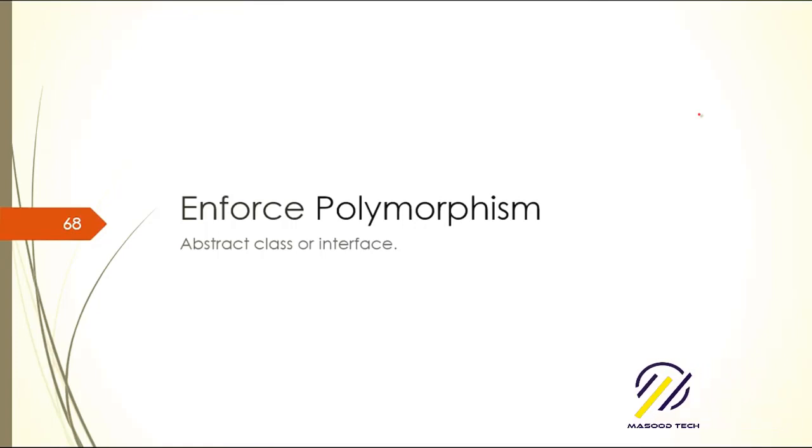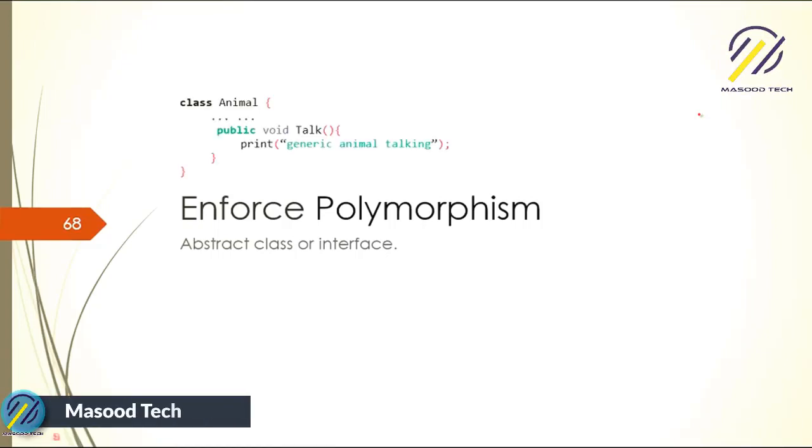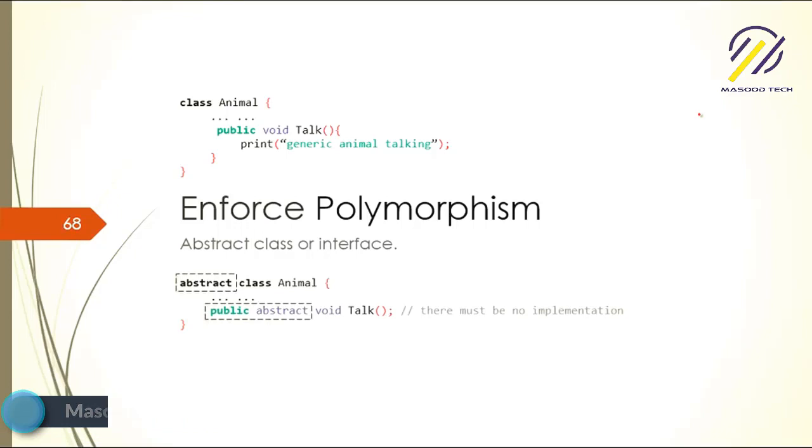The contracts implementation means if you don't implement the abstract class contracts, you'll get an error at compile time. So if you have a class and you want to enforce polymorphism of these talk methods, you can do it with abstract class. Just put the abstract keyword in front of your class.